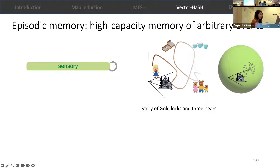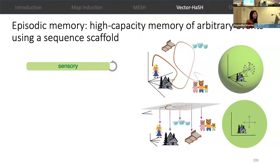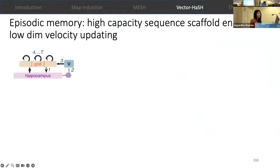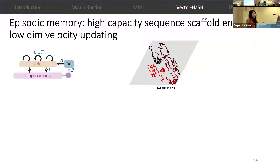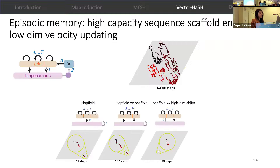Next, we look at episodic memory. Instead of learning sequences by learning high-dimensional transitions in a high-dimensional space, VectorHash maps the problem of learning these high-dimensional transitions to simply learning low-dimensional transitions on a sequence scaffold, and high-dimensional sensory inputs can then simply be associated with the scaffold. We use the same core architecture in VectorHash and learn a multilayer perceptron, where the MLP learns the next action predictions in an abstract sequence on the grid coding space. Through low-dimensional velocity updates, this network is able to store very long sequences, in contrast with existing baseline Hopfield models, which have a catastrophic draw because they try to learn transitions in the high-dimensional space and fail even when aided with the scaffold.